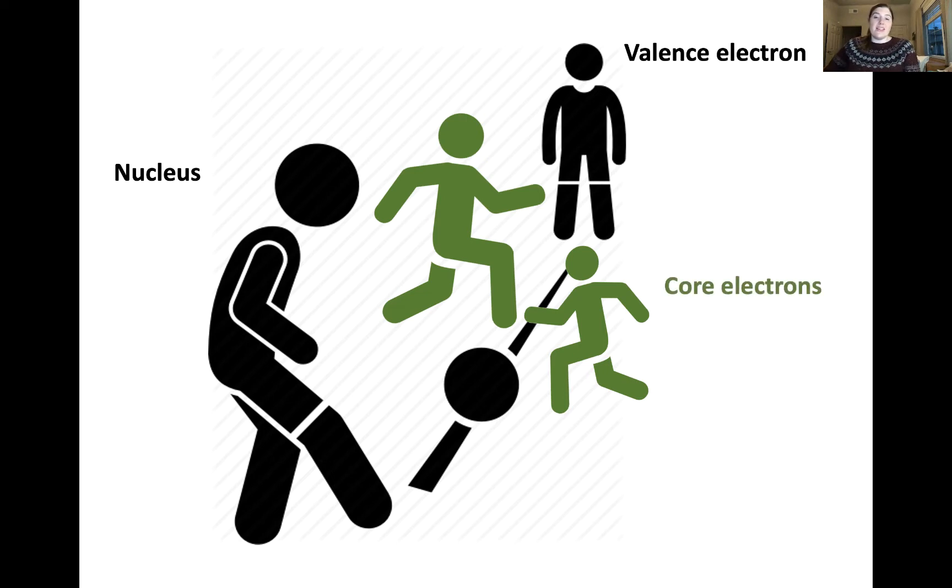When the core electrons get involved, however, they kind of block the valence electron from feeling the full attraction of the nucleus, which is represented by the ball being passed. It becomes more challenging to pass the ball with more and more interference. And this is what we refer to as shielding.